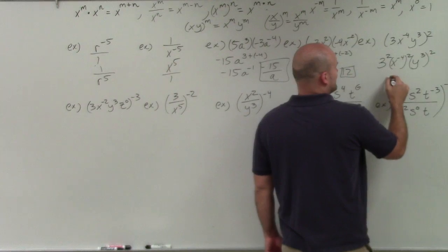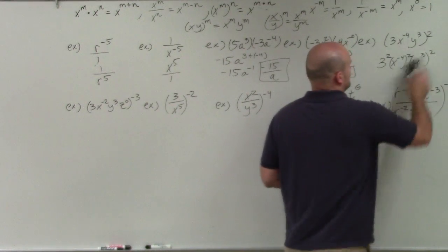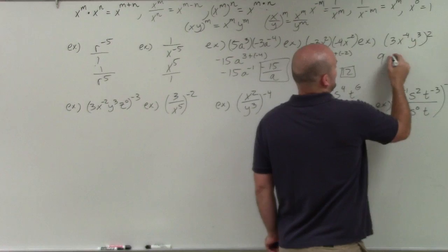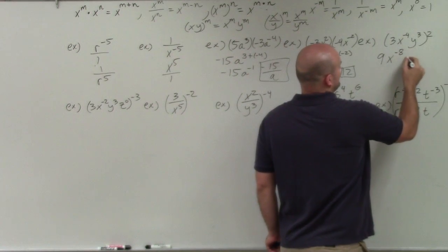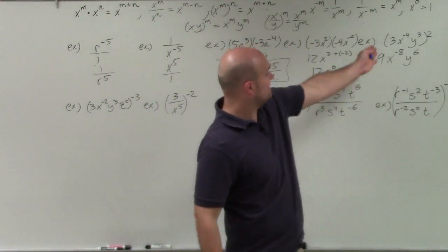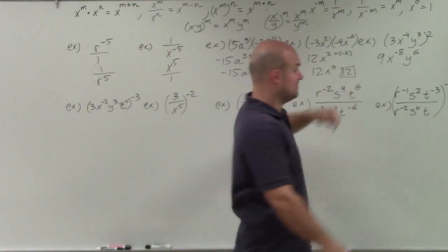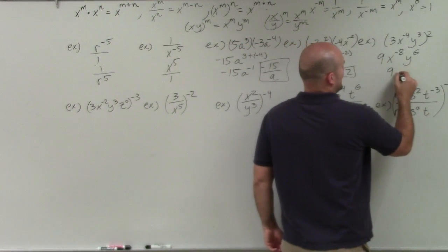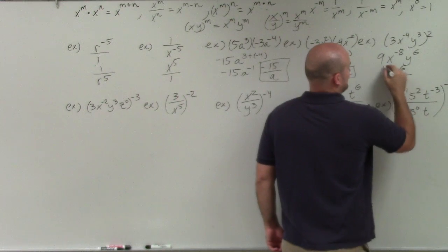That's going to leave me with 9 x to the negative 8, y to the 6. To write my final answer, I need to write the negative power in the denominator. So that's going to leave me with 9 y to the 6 over x to the 8.